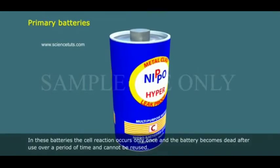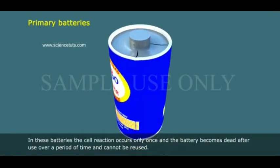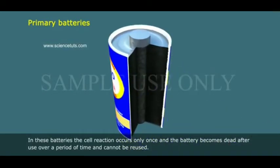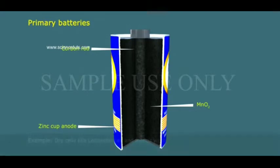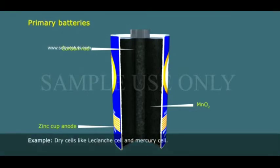Primary batteries. In these batteries, the cell reaction occurs only once and the battery becomes dead after use over a period of time and cannot be reused. Example, dry cells like Leclanchi cell and mercury cell.